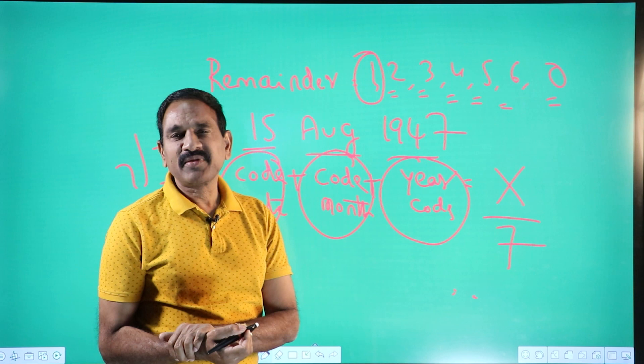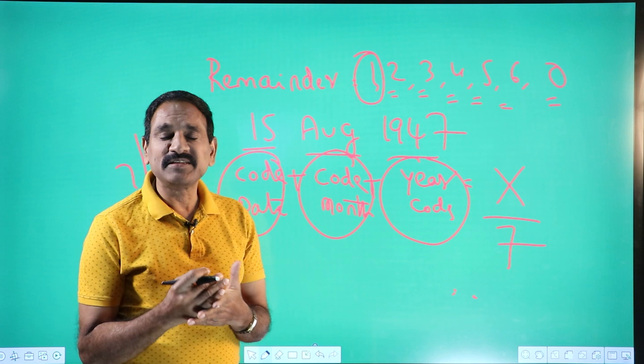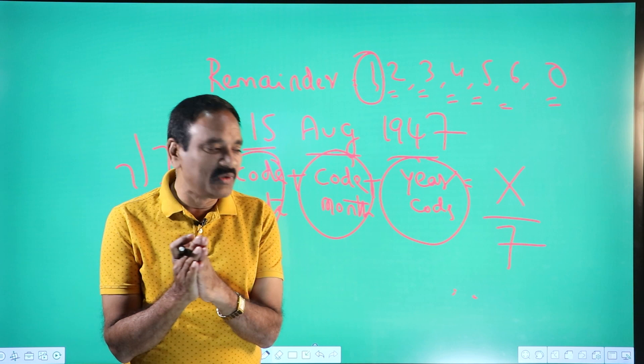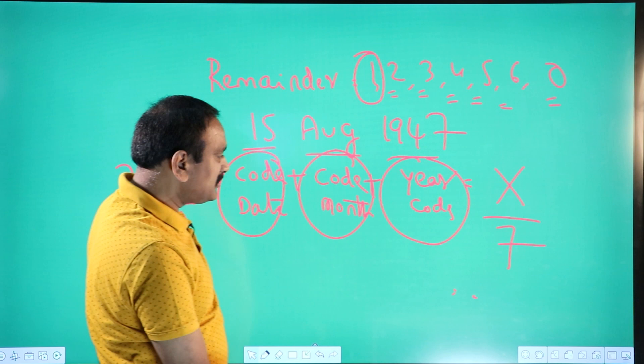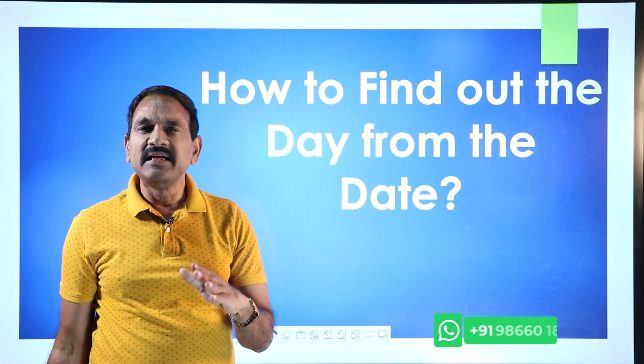You might ask: how do you find the date code, month code, and year code? The thing is, I have developed a very simple method for all of you. You will be able to do it very, very easily. You just need to know this method — once you know it, it becomes easy. I have developed one of the most beautiful methods ever on this subject.